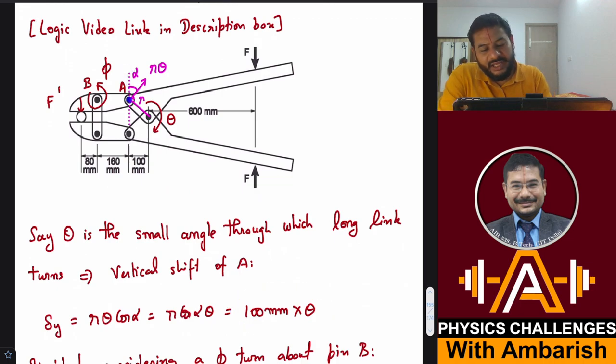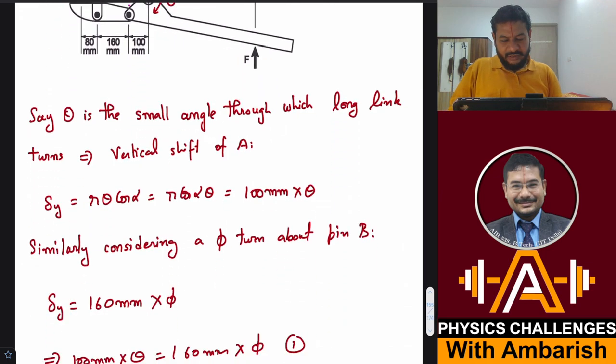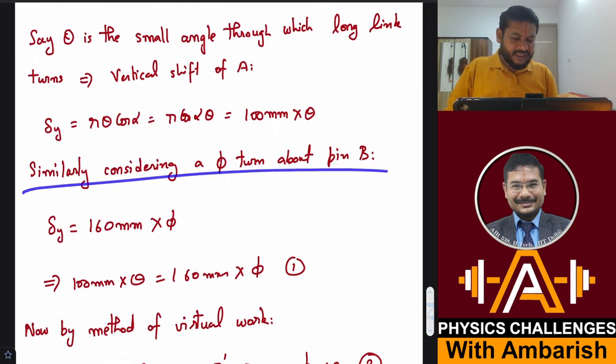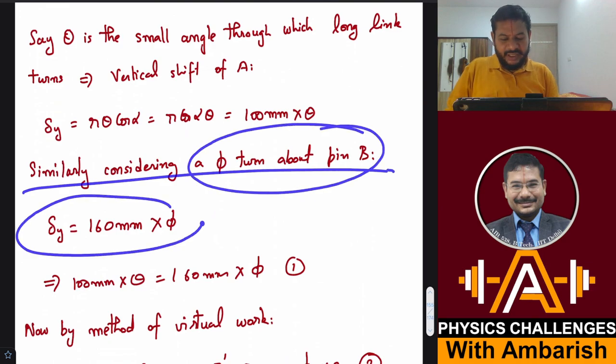Now the pin A is also moving. You can think about the movement about pin B. Pin B acts like a hinge and joint A moves a little bit upward because this joint at pin B turns through an angle phi. Then the vertical shift of A is also 160 into phi. Similarly, considering a phi turn about pin B, delta Y is 160 into phi because this distance is 160.